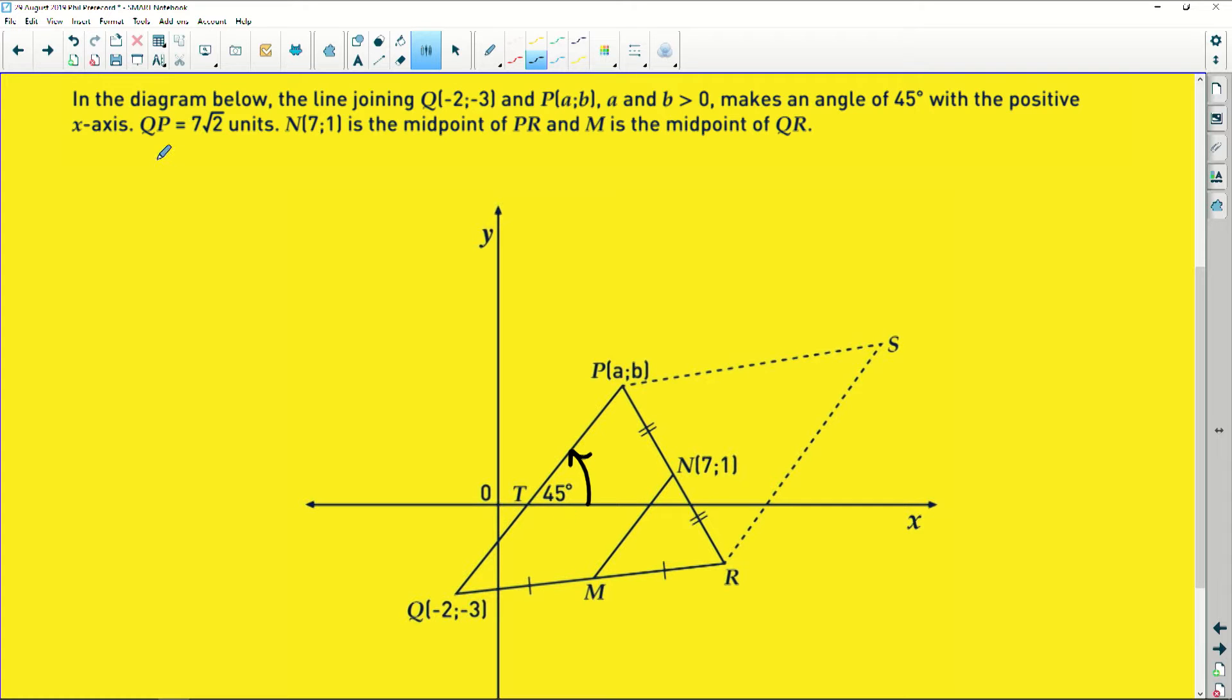It says that QP, which is the line we're talking about, is 7 root 2 units. So this whole line here is 7 root 2. It says that N at 7, 1 over here is the midpoint of PR, so it sits right smack in the middle of that line, and M is the midpoint of QR.